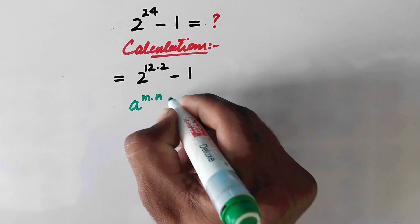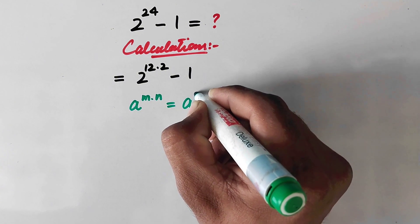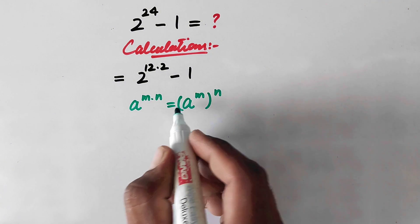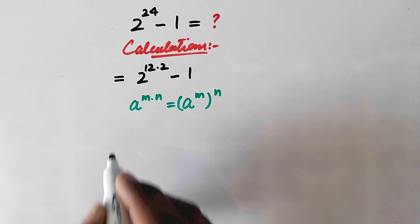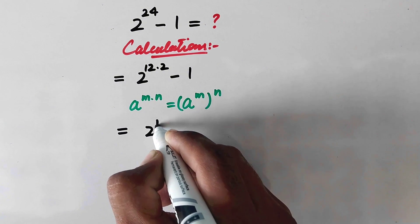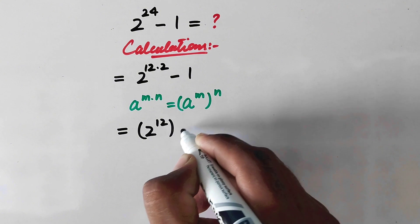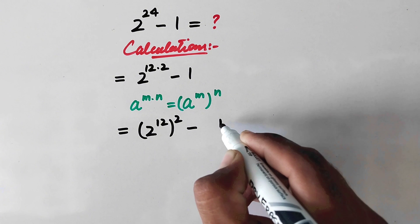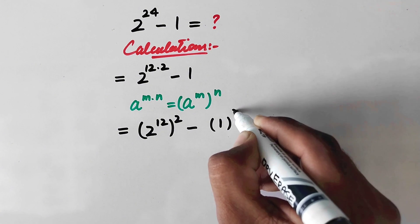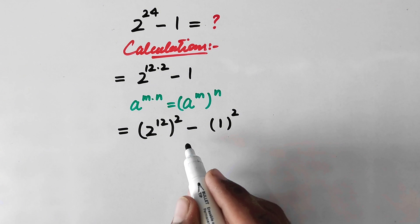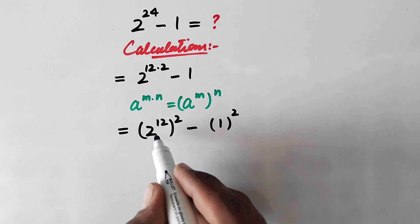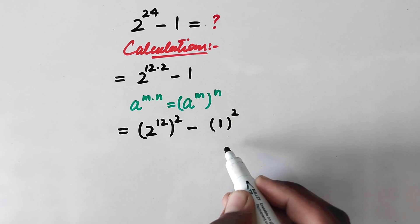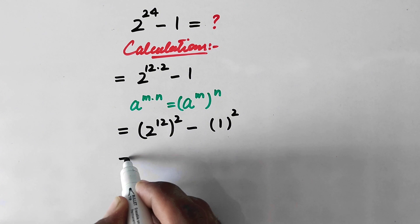Now we can follow a property of exponents: a to the power m times n is equal to a to the power m, to the whole power n. By following this property, we can write 2 to the power 12, to the power squared, minus 1. We can also write this 1 as 1 to the power squared. Now we can apply the algebraic identity a squared minus b squared.